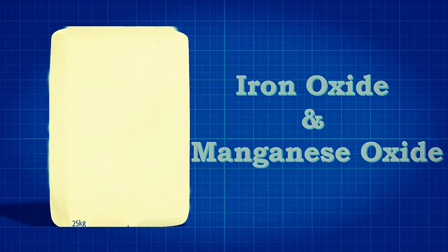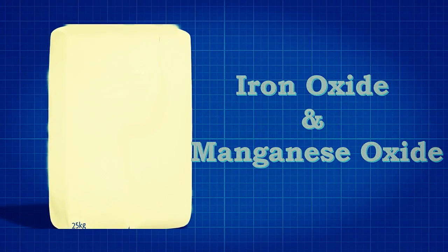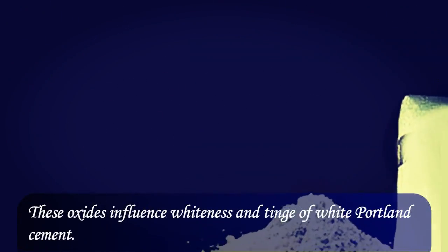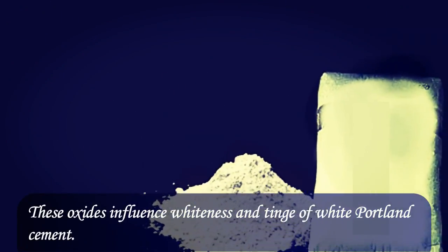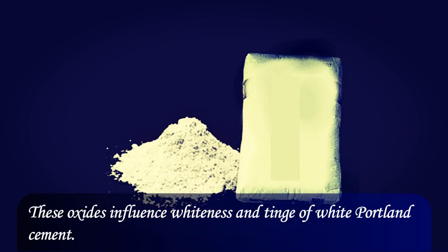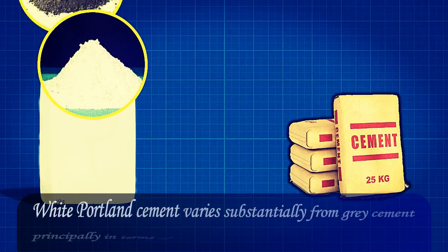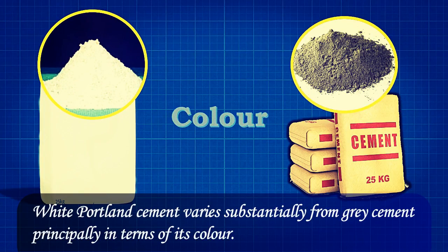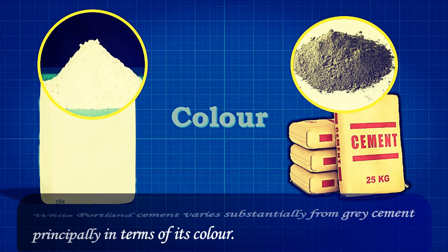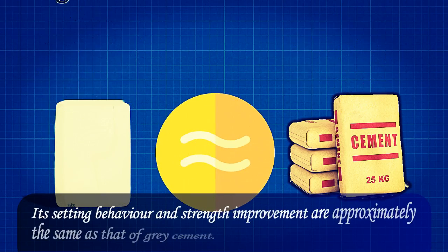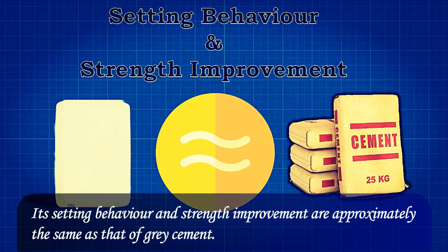White Portland cement consists of a very slight volume of iron oxide and manganese oxide. These oxides influence the whiteness and tinge of white Portland cement. White Portland cement varies substantially from gray cement principally in terms of its color.